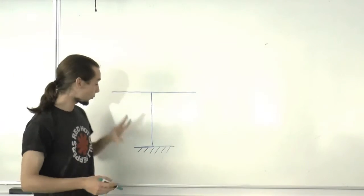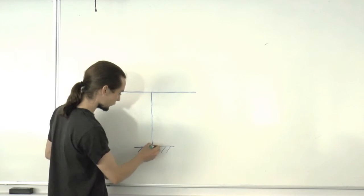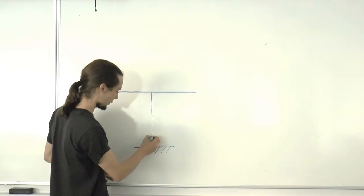Let's finally draw the deflected shape. We can start from the bottom. It's an encastre. There's not going to be any rotation. We can start drawing up like this.